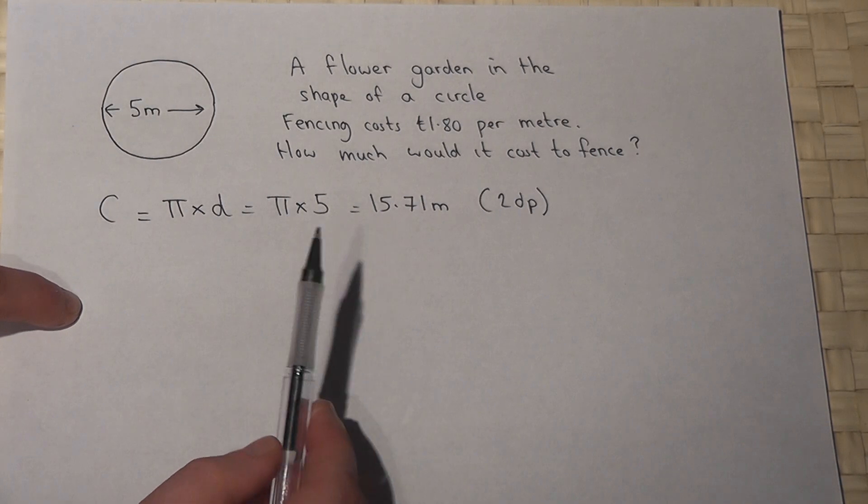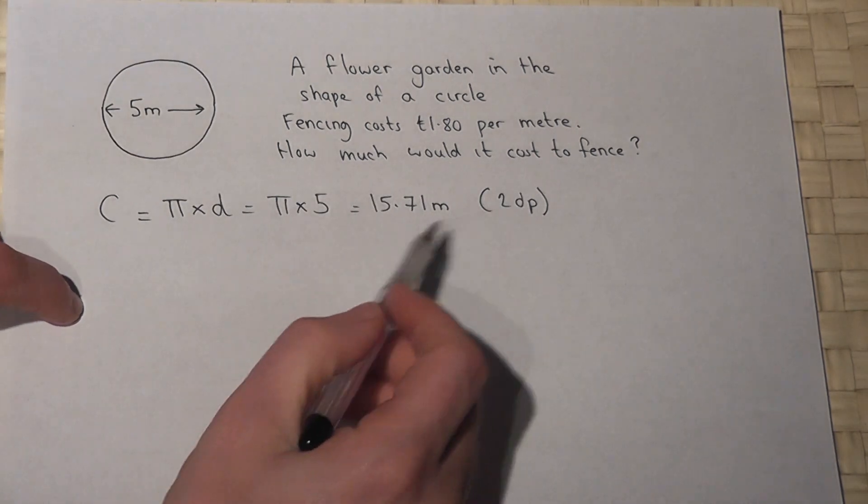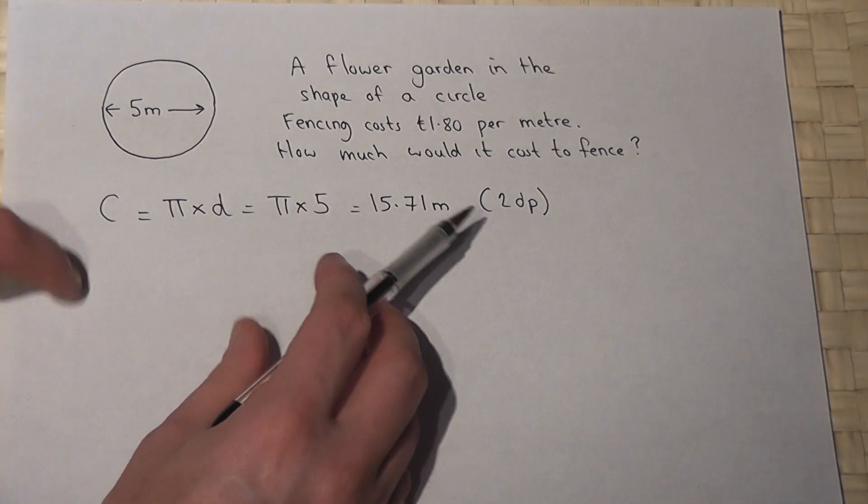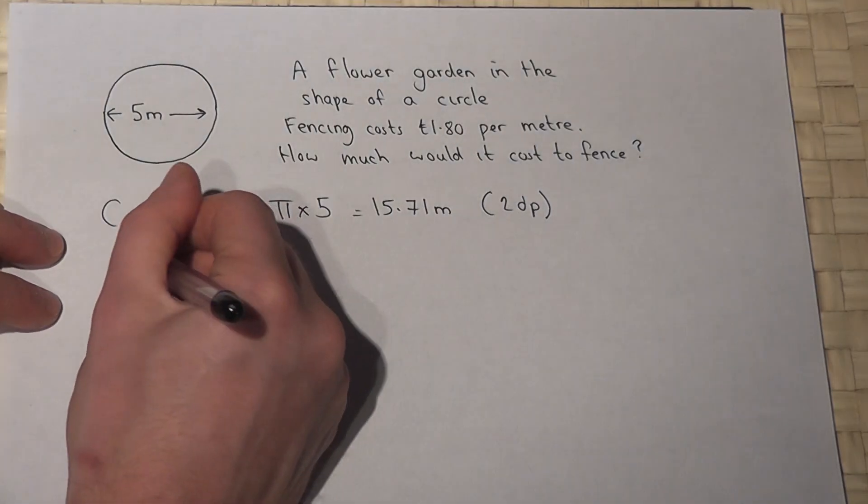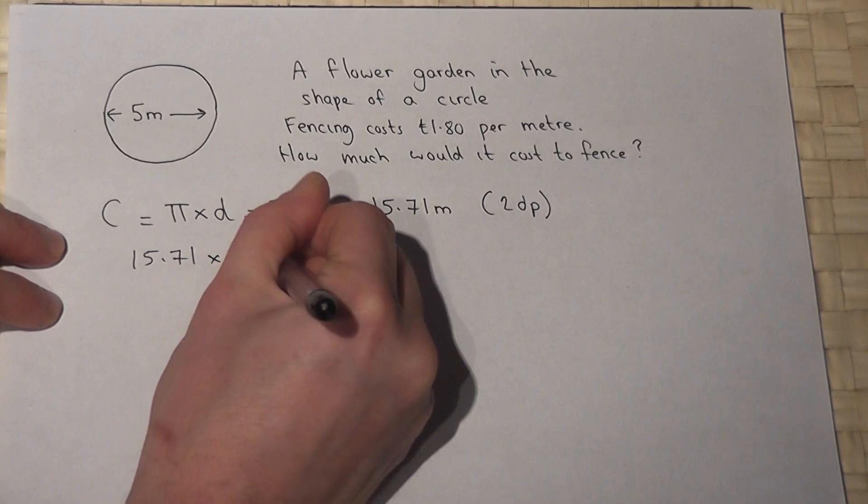So the amount it would cost to fence this flower garden would be the distance times by the cost. So if I do 15.71 and times by 1.80,